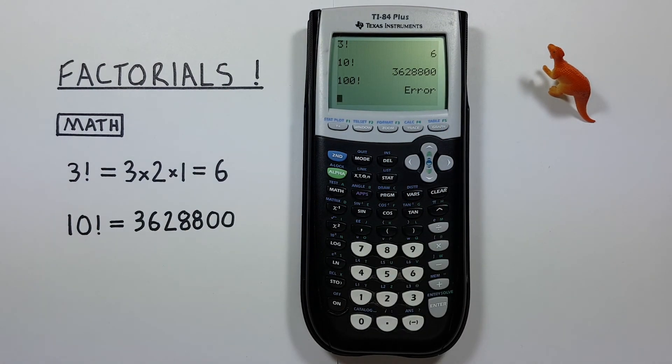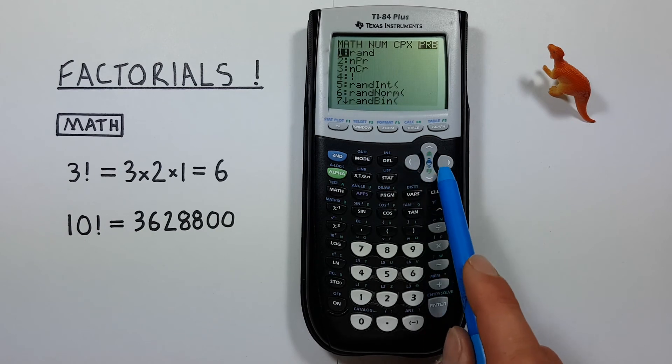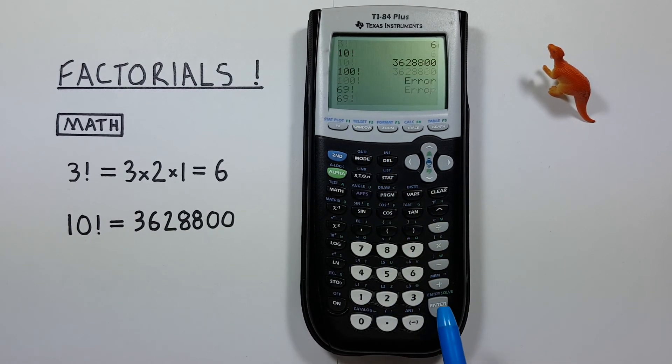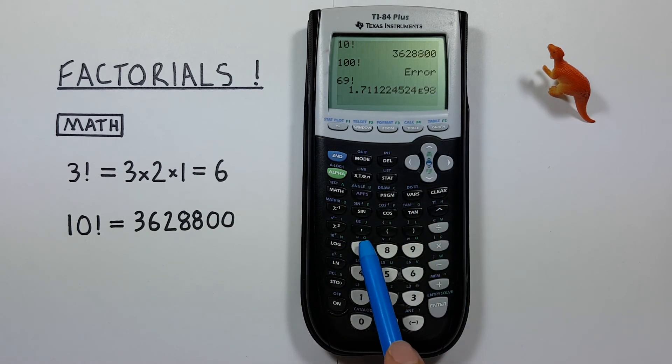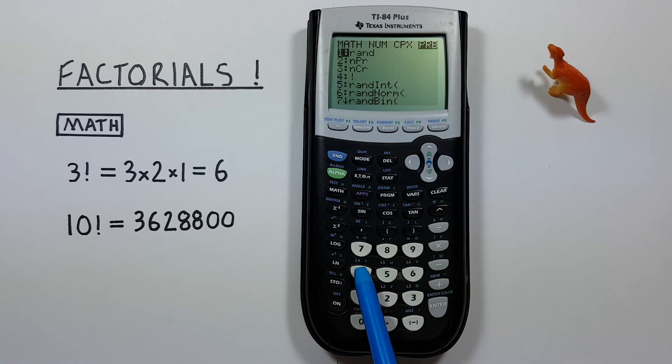The largest factorial that this calculator can handle is actually 69 factorial. We can see this if we enter 69 factorial and calculate it. We get a result. But if we try 70 factorial, we get the error.